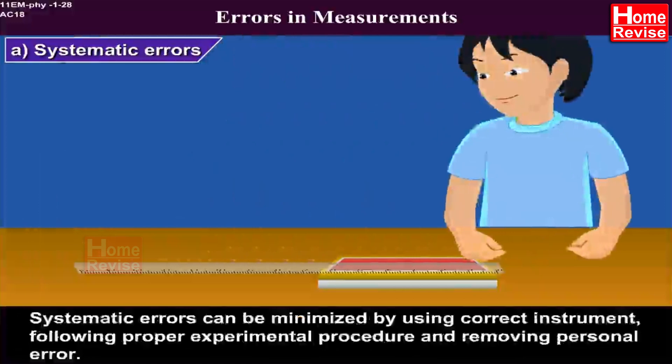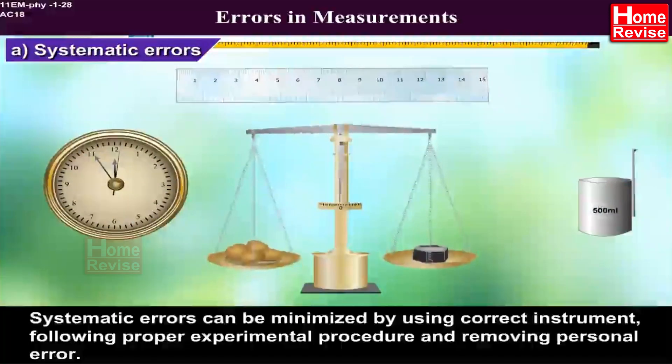If the observer looks at it from an angle, the measured length will be wrong due to parallax. Systematic errors can be minimized by using correct instrument, following proper experimental procedure, and removing personal error. B.